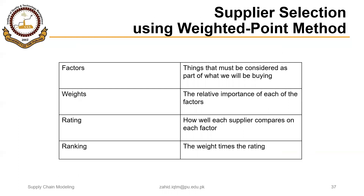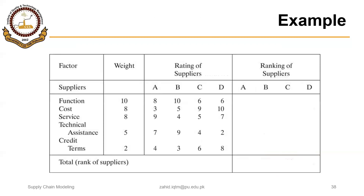A similar but simpler method is the weighted point method. In this method, just like AHP, we have some factors and assign weights to them, then rate the suppliers against each factor. In this example, we have five factors against which suppliers are evaluated, and we have assigned certain weights to each factor. In contrast to AHP, these weights are intuitively assigned based on judgment and experience instead of pairwise comparisons.